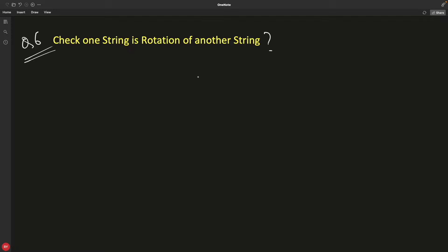We will have two strings. Let's say we have A, B, C and D. This is your main string. And we will have a rotated string. Let's say C, D, A, B. This is rotated.